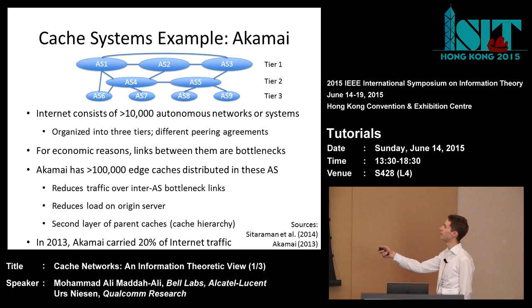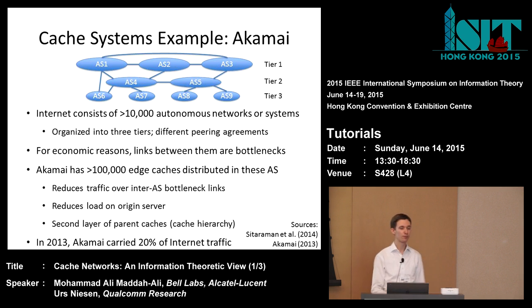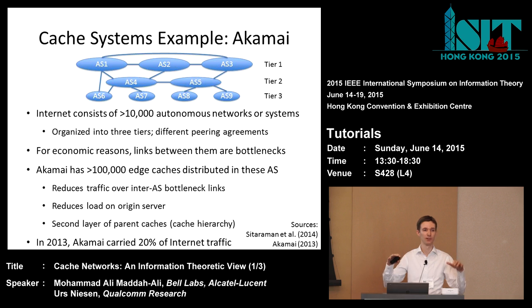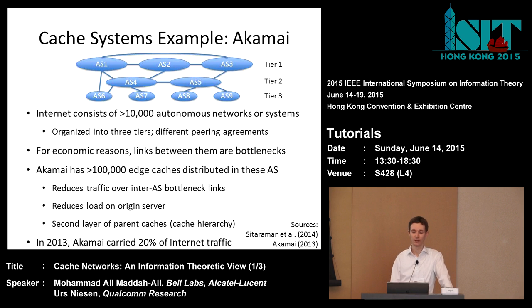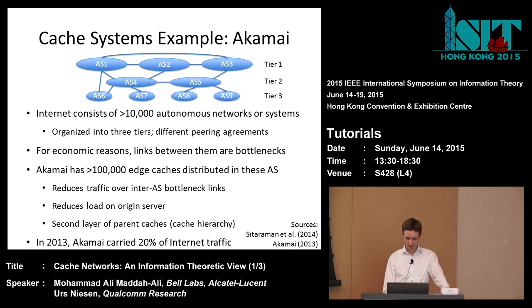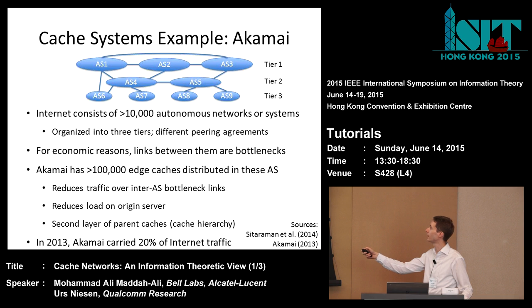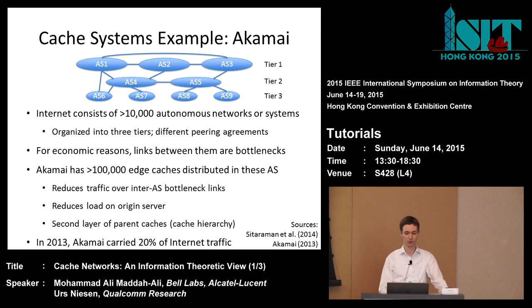Typically, two autonomous systems at the same tier level carry each other's traffic for free. However, a tier two ISP connected to a tier one ISP has to pay for that tier one to carry its traffic — money flows from bottom to top. ISPs at the same level don't charge each other, so if one AS sends a packet via a peer AS at the same tier, no money is exchanged.